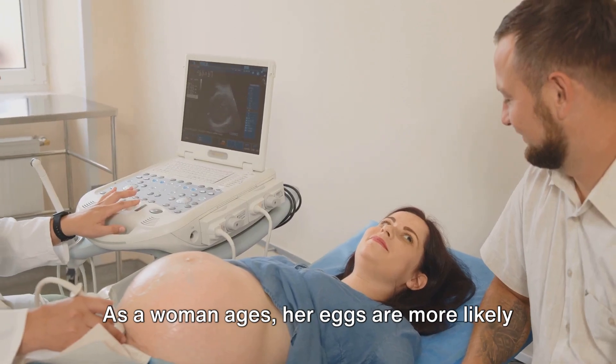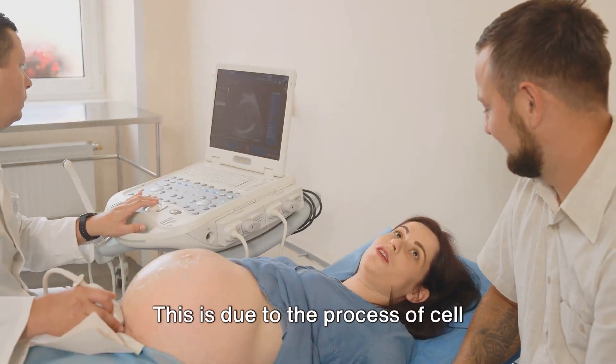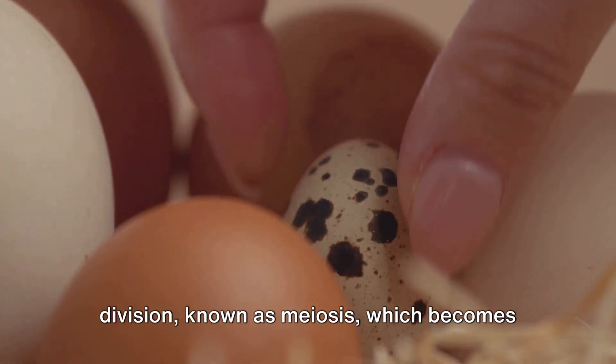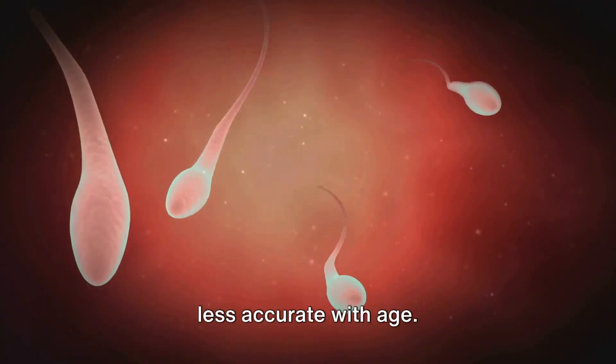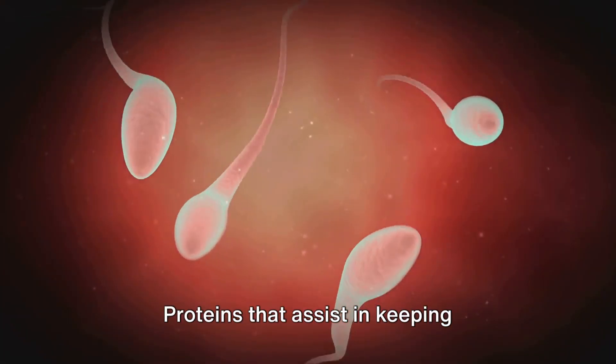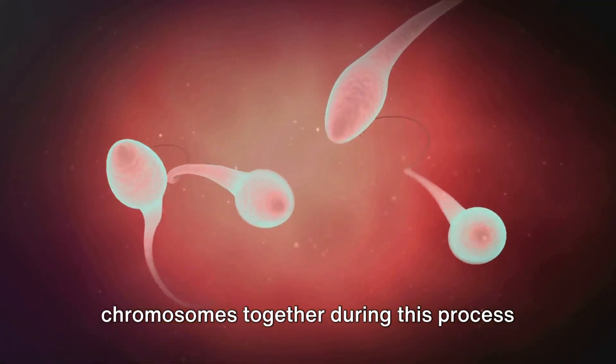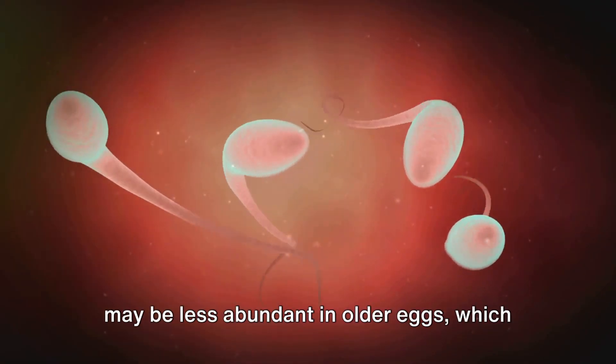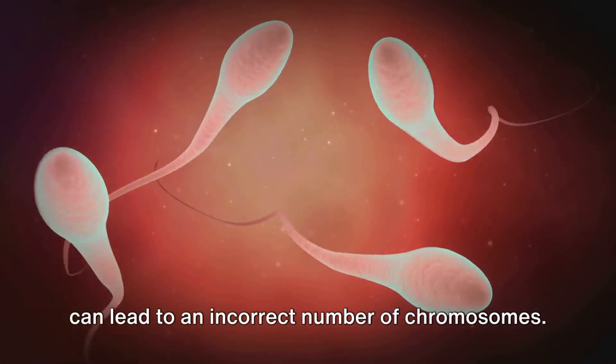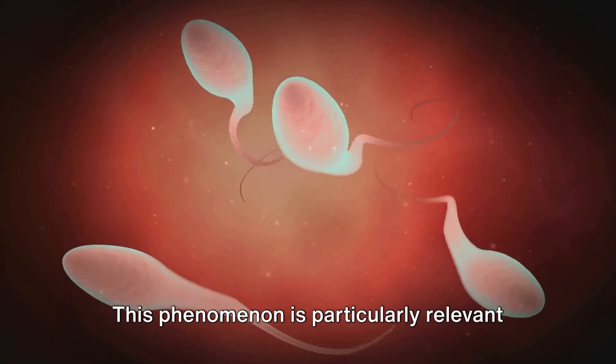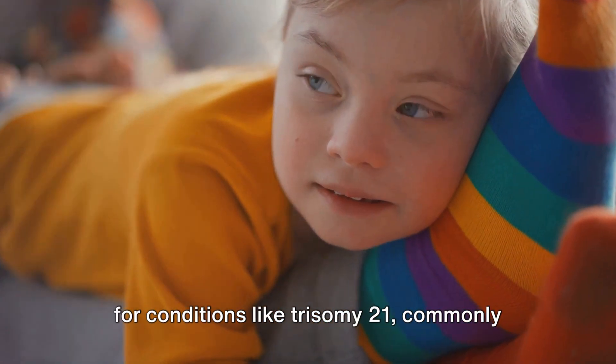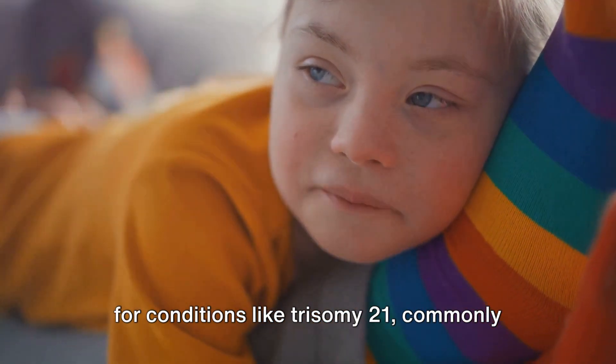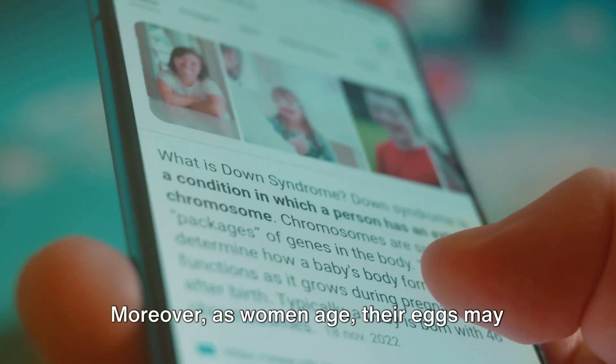As a woman ages, her eggs are more likely to have chromosomal abnormalities. This is due to the process of cell division known as meiosis, which becomes less accurate with age. Proteins that assist in keeping chromosomes together during this process may be less abundant in older eggs, which can lead to an incorrect number of chromosomes. This phenomenon is particularly relevant for conditions like trisomy 21, commonly known as Down syndrome.